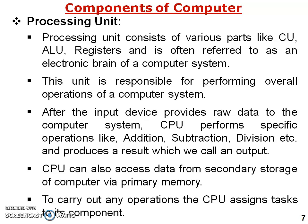The processing unit receives data in the form of clicks, pointing, and characters. The processing unit consists of various parts like the control unit, arithmetic logic unit, and registers for handling intermediate results, and is often referred to as the electronic brain of a computer. The CPU is nothing but the brain that operates everything. This unit is responsible for performing the overall operation of a computer system — after the input device provides raw data, the CPU performs operations like addition, subtraction, division, and produces results which we call output.